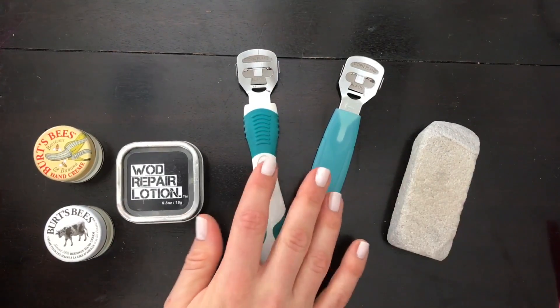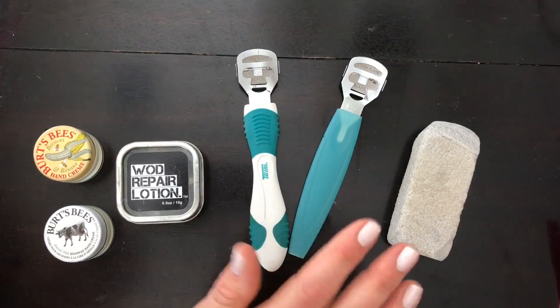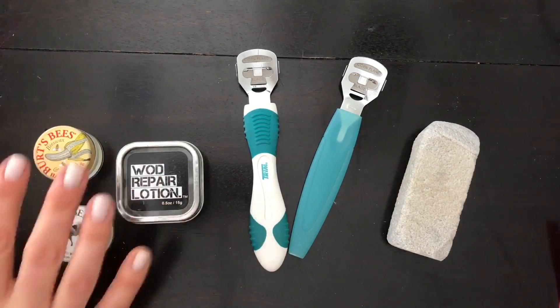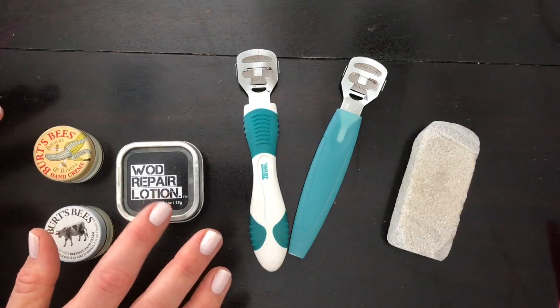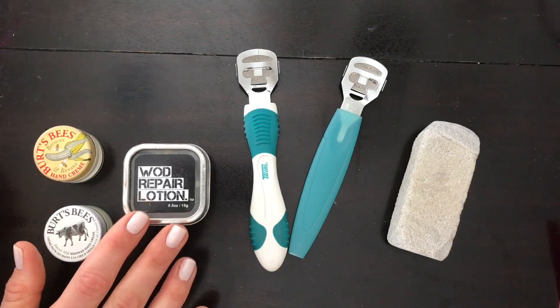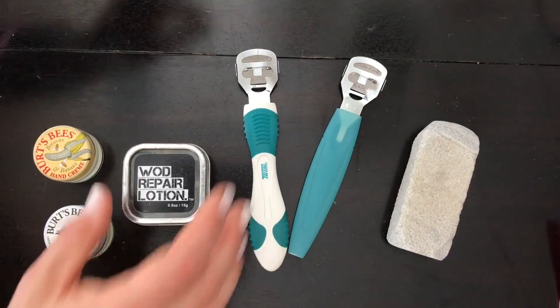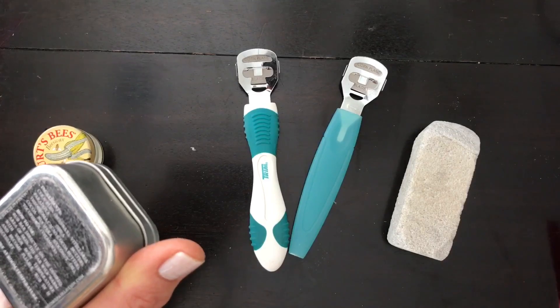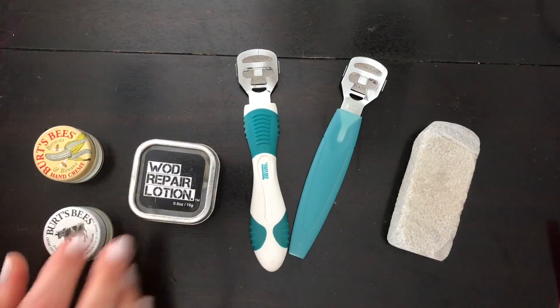The other tool that I use is after I've done this, I'll typically take a shower and use a pumice stone to kind of smooth out any rough edges. And then finally, lotions and creams. I would highly recommend if you ever do tear your hands to check out WOD Repair Lotion. It's a great mix of shea butter, cocoa butter, beeswax, coconut oil, and can really help speed up the repair of a tear.